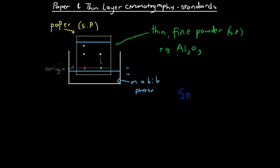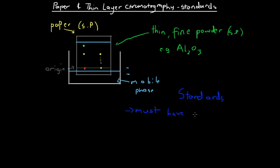A key way to analyze chromatograms is using standards. A standard is an accurate known reference that we can compare against. If we want to analyze a substance — say dissolved fruit juice — and we want to find out if it contains a certain substance, we can do that using the idea of standards, but we must already have an idea of what we're looking for.